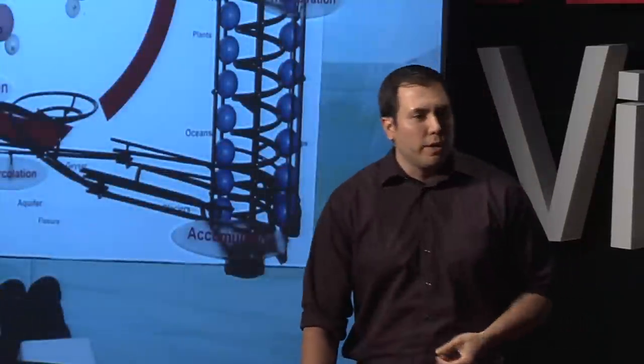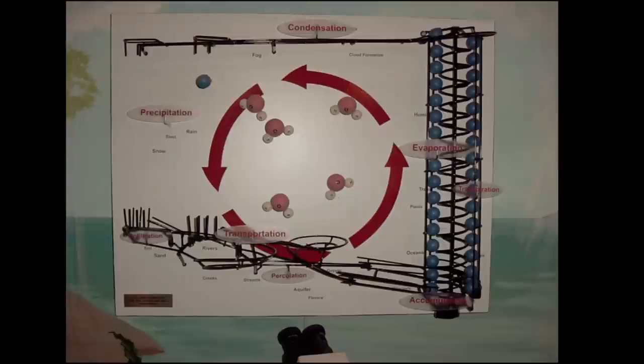For instance, we can explain the naturally occurring water cycle by using a lift to represent water molecules moving up into the sky, rolling across the top as condensation and dropping down as precipitation.